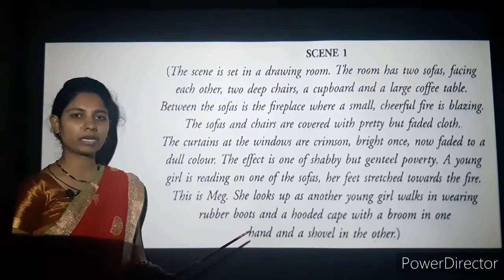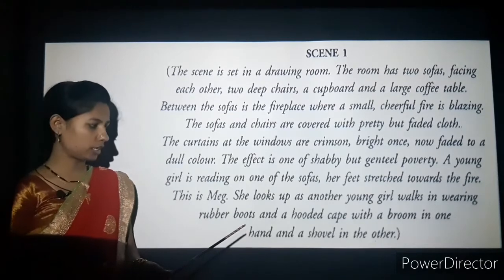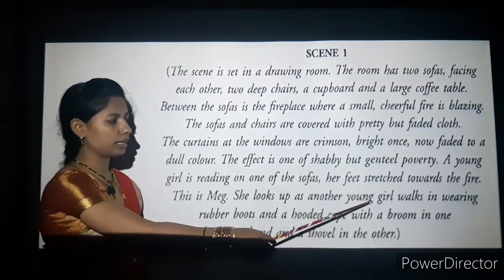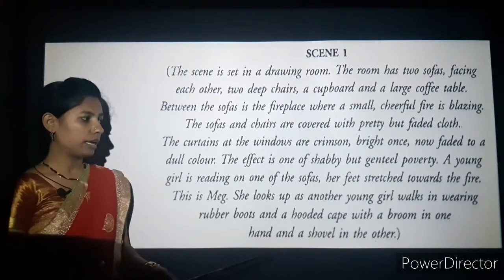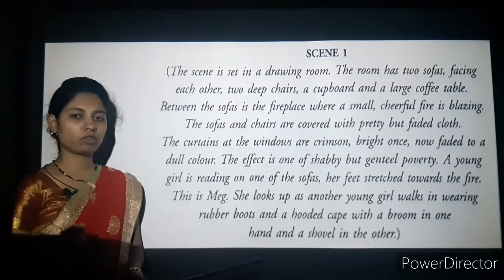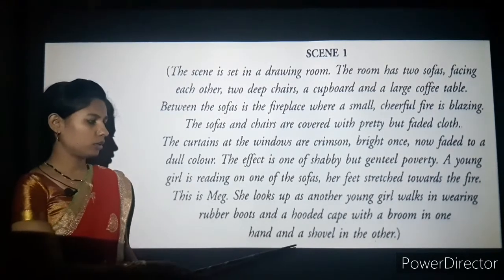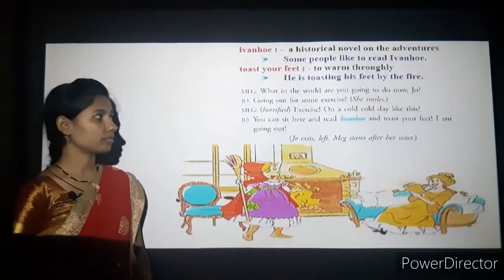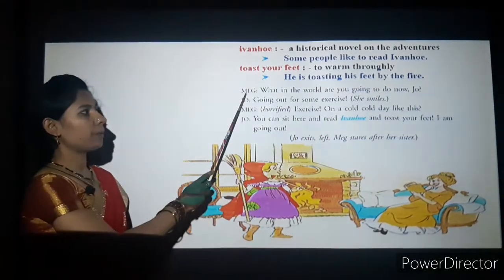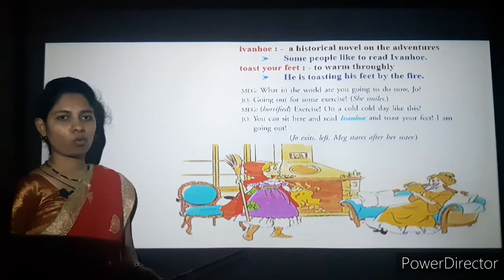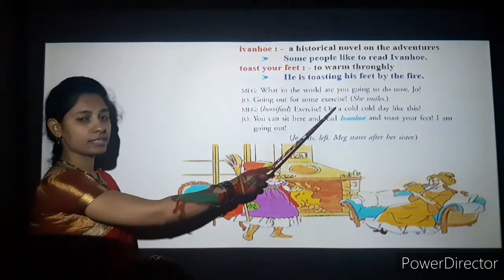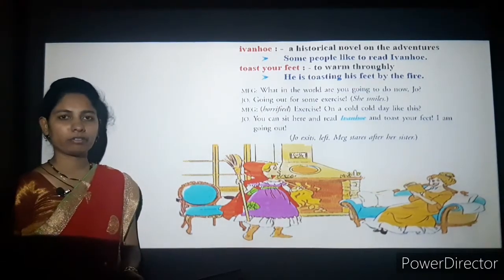This is Meg — the elder sister who was beautiful and fond of luxuries. Meg looks up at Jo, who is walking in wearing rubber boots and a hooded cape with a broom in one hand and a shovel in the other. Meg asks: 'What in the world are you going to do now, Jo?'